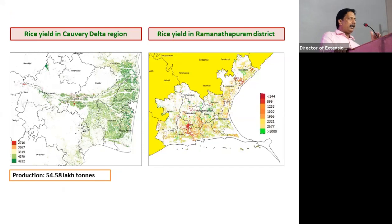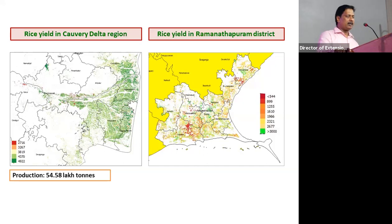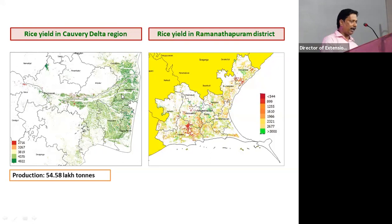By integrating remote sensing data with weather, soil files, varietal information, and management practices, we generate pixelized rice yield estimates. For any field with latitude-longitude values, rice yield can be estimated with an accuracy of 87% to 93%. During 2017, yield levels in the delta region were more than 4 tons, while in the same year, the Ramanathapuram district experienced total crop failure — clearly captured by our system — resulting in insurance payouts and relief.